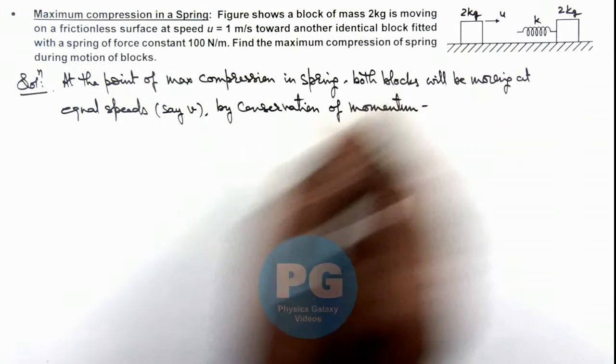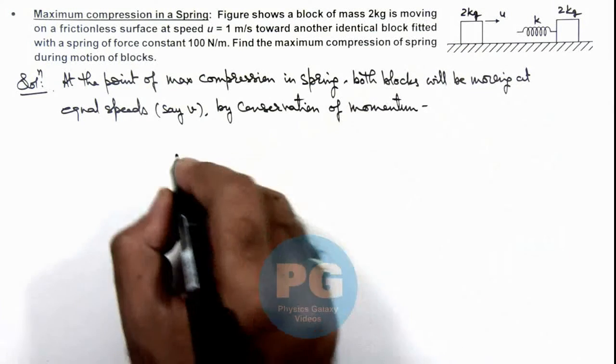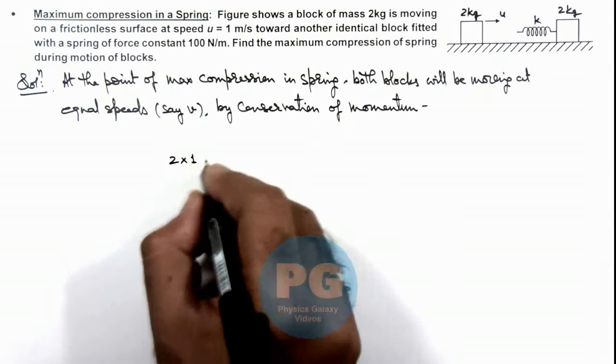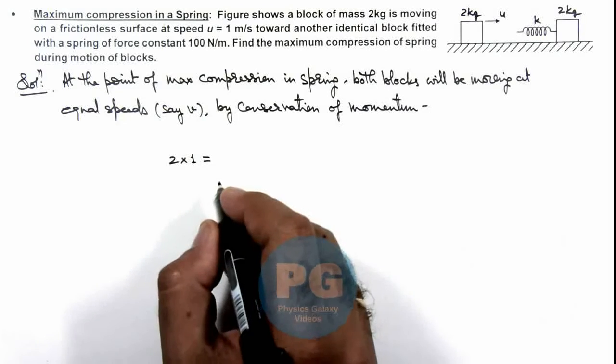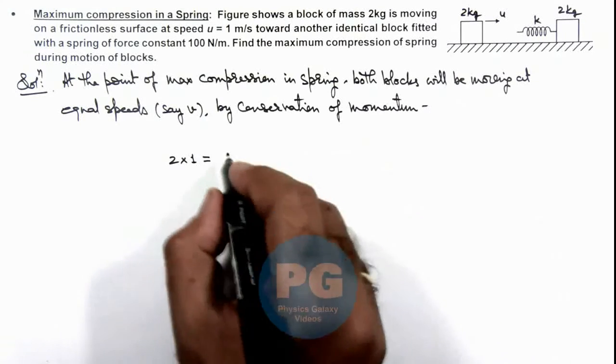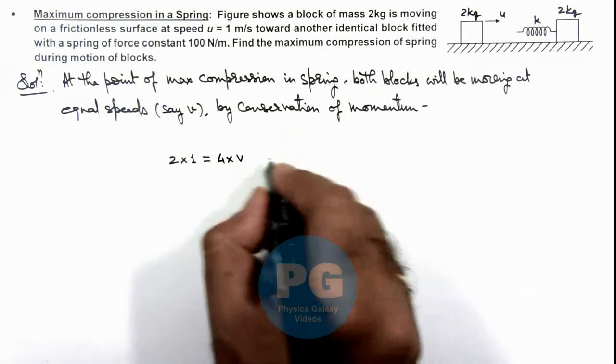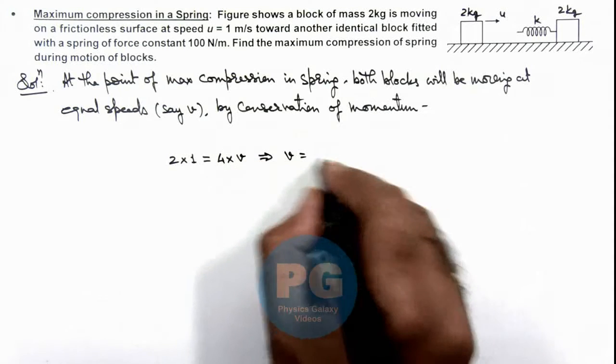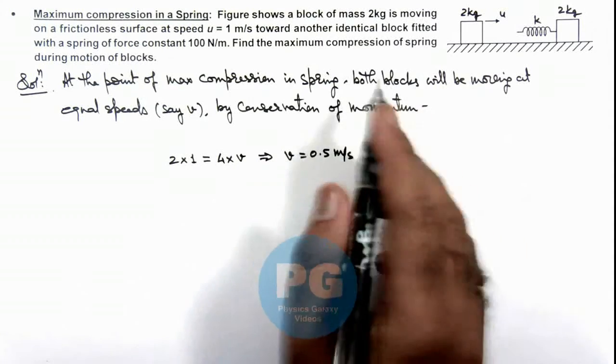Here we can write initial momentum of the system was 2 multiplied by initial speed 1 meters per second, equals final velocity v for both blocks. The total mass is 4, so this will be 4v, which gives us the final velocity equal to 0.5 meters per second when the compression in spring is maximum.